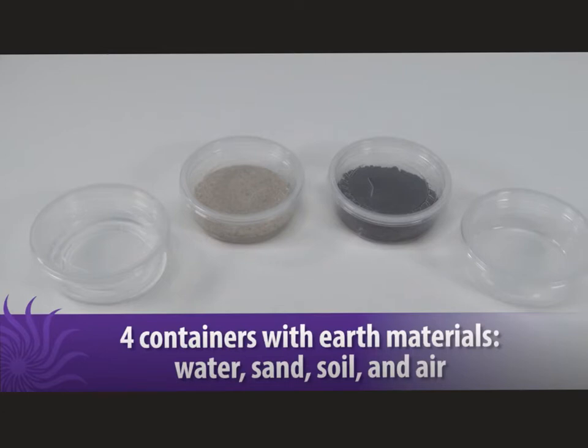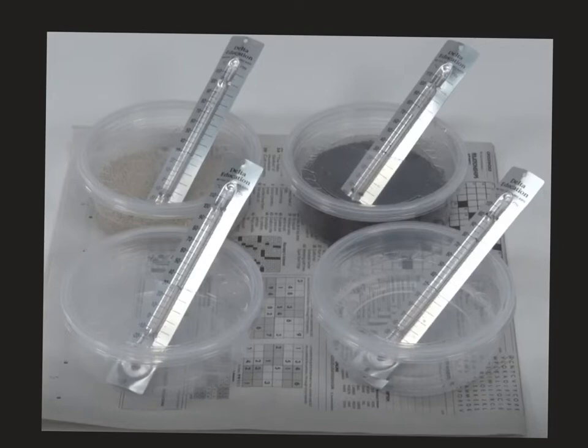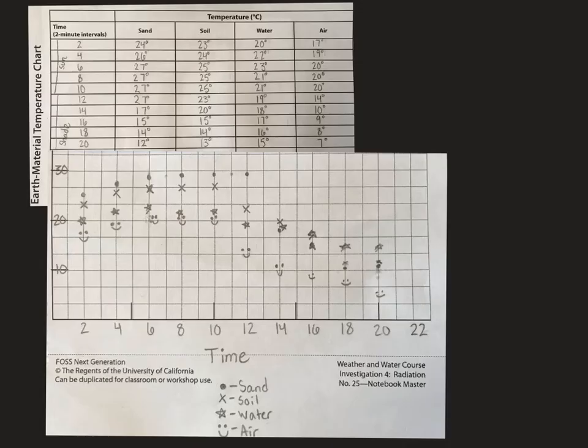After we had those earth materials, we put thermometers in them reading Celsius. We tried to keep them as close to the surface level as possible and then we put an insulating layer underneath each of the materials and then set them out into the sun for 10 minutes and set them out into the shade for 10 minutes after that. That's shown by our data here.